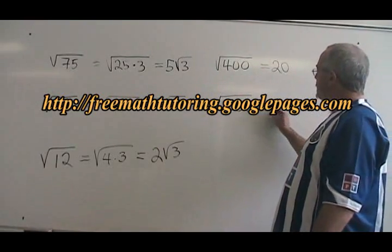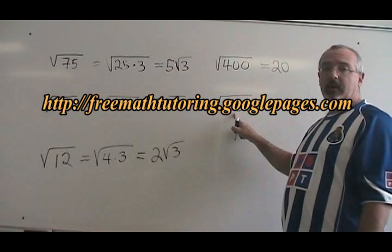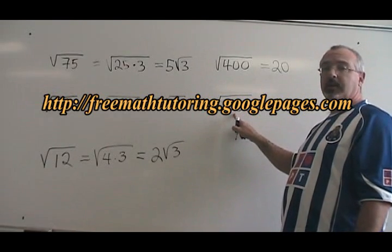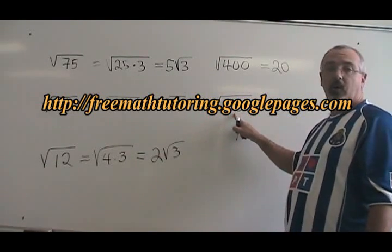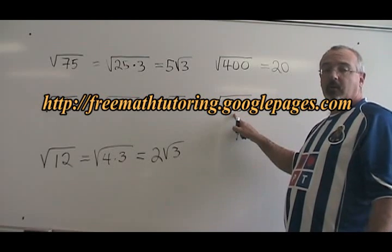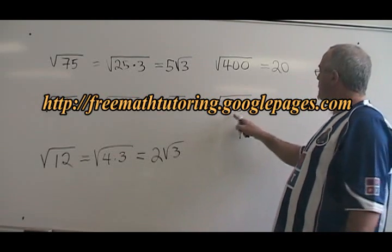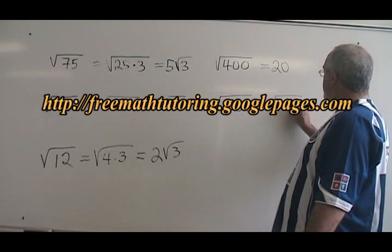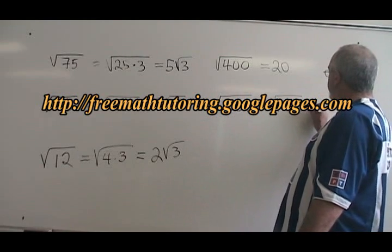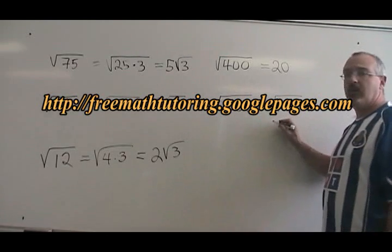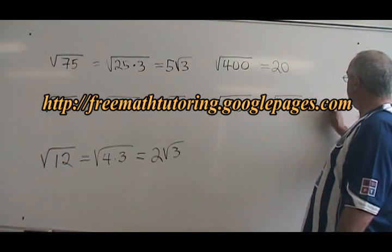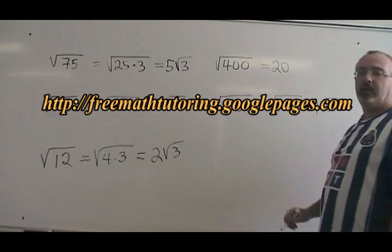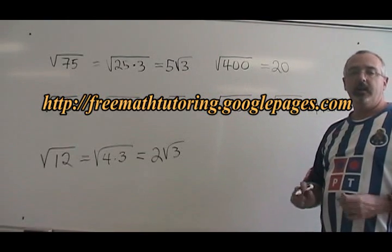The largest factor of 32 that is a perfect square is 16. Watch out, because 32 also has a factor of 4 — they're both squares, but you need the larger one. 16 is larger than 4, so you write 16 times 2. The square root of 16 is 4, so the 4 comes out, and you are left with root 2 inside the radical, and you're finished.